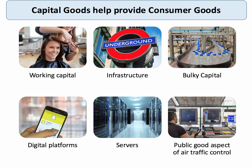It's important to realize that capital goods are key to providing consumer goods — be it the working capital used in a hairdresser, the scissors and the hairdryers; the core infrastructure providing underground services in London; the bulky capital that allows mass production of things like bottled water and drinks; or the technology that lies behind digital platforms such as Snapchat, Uber, and Airbnb.